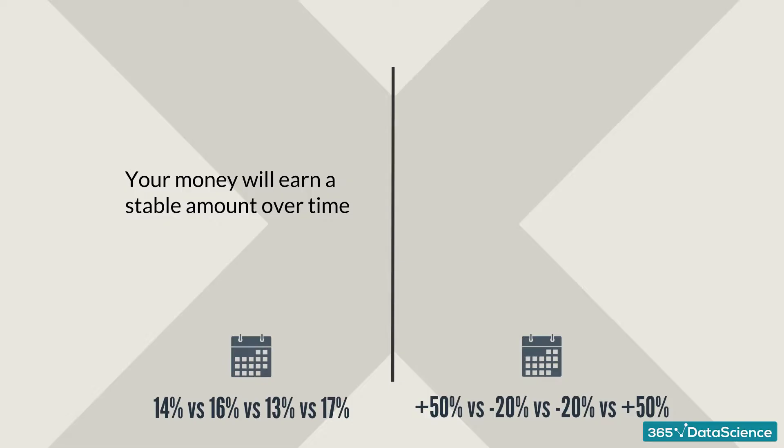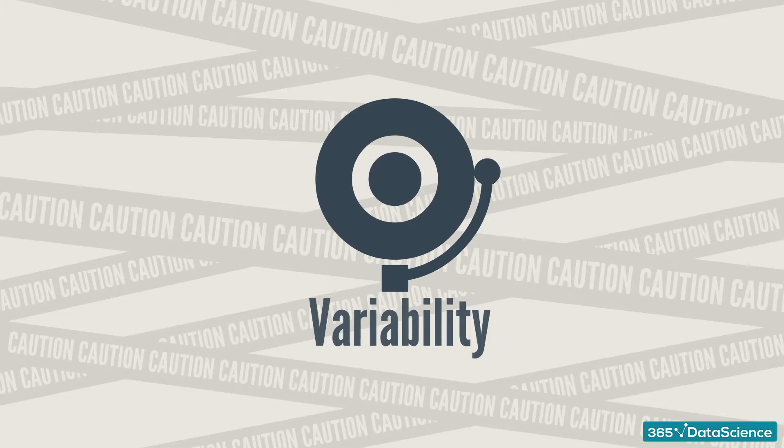Things change dramatically with the second set of data. There is a huge variability from one year to the next. The average return is the same; however, you can't have an idea about what comes next. If you are an investor who holds the stock for two years, you can lose 40% of its value if the years when you hold the stock are years two and three.